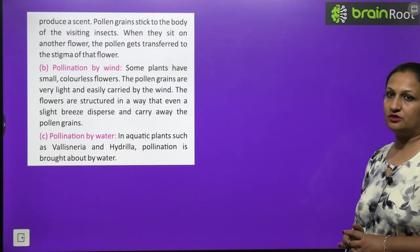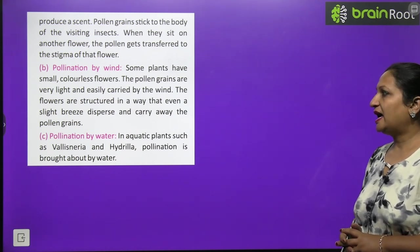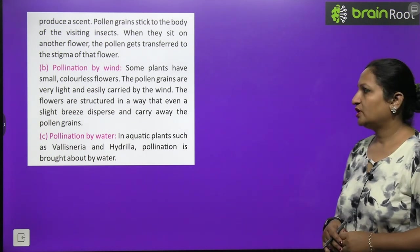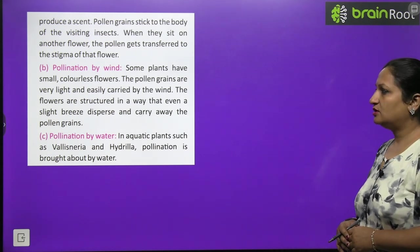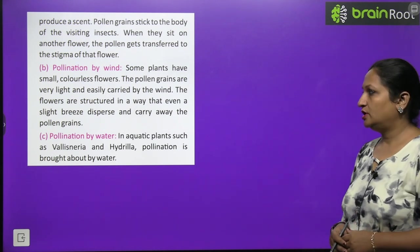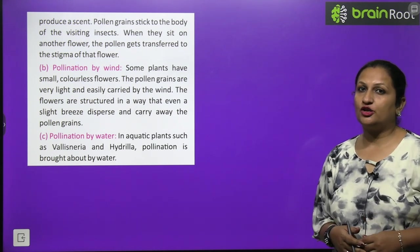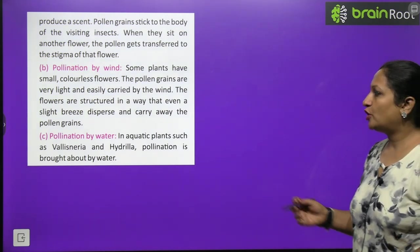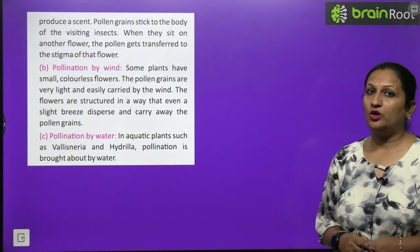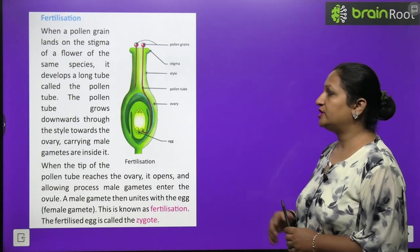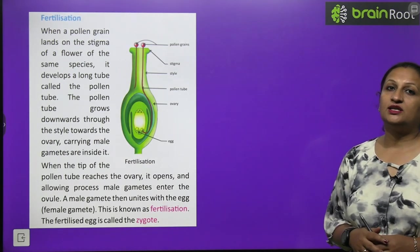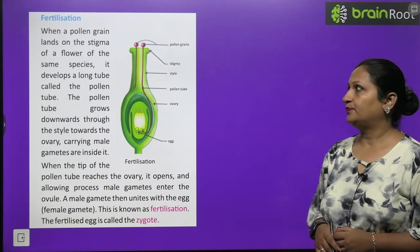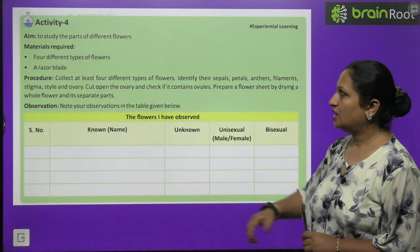Now pollination by water. In aquatic plants such as vallisneria, hydra, hydrilla, the pollination happens through water. So here the pollen grains - how should they be? They should be spongy. They can travel through water.